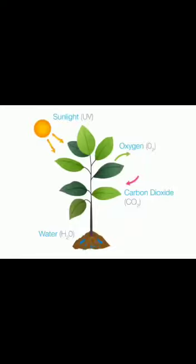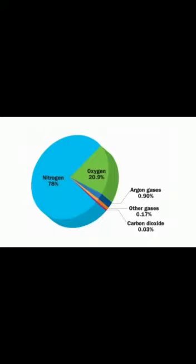Plants make their food using air and water in the presence of sunlight. When plants make their food, they use the carbon dioxide from the air. When you place ice in a glass and it becomes very cold, droplets of water settle on its outside — this means that water is also present in air in the form of a gas. The largest part of air is made up of another gas called nitrogen. So air is a mixture of several gases.